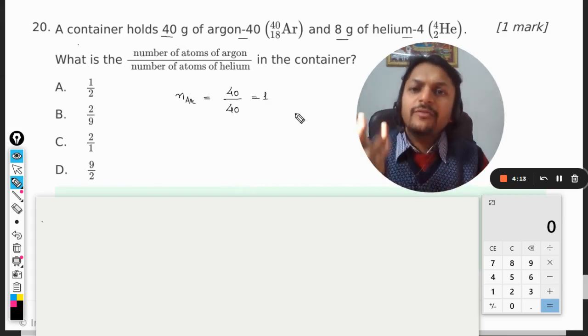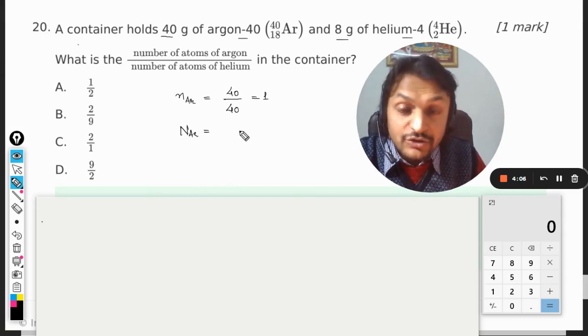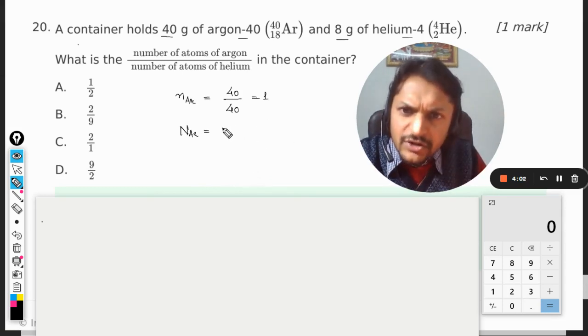You can see the number of moles for argon is 1. So how many molecules of argon are there? That will be equal to Avogadro's number. So instead of writing like that, I'm just writing Avogadro's number.